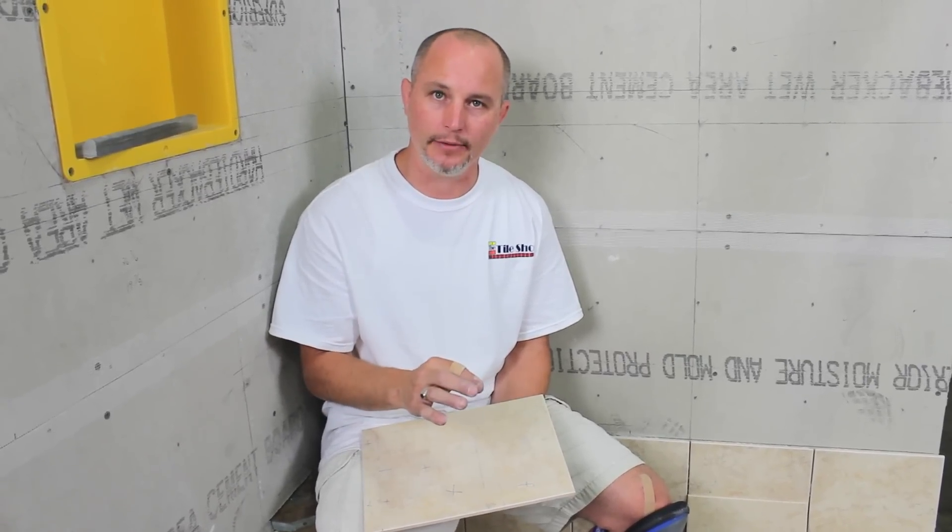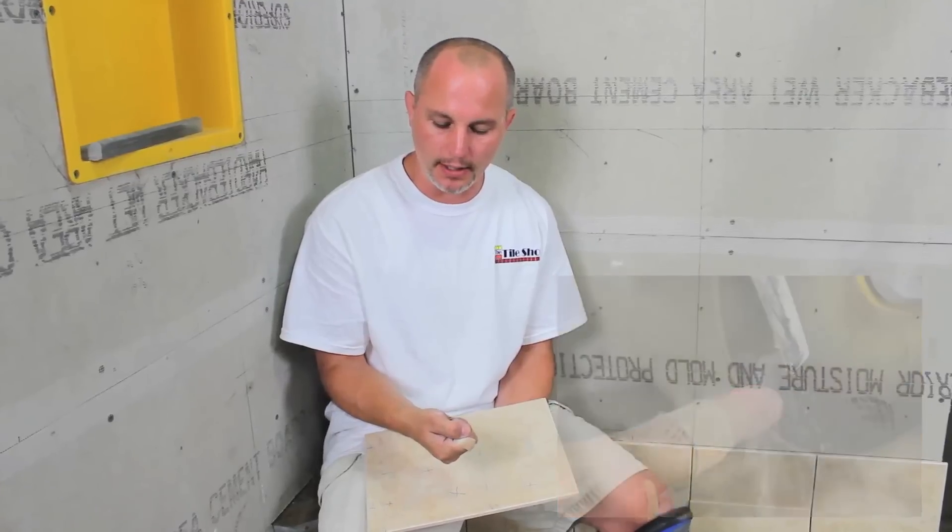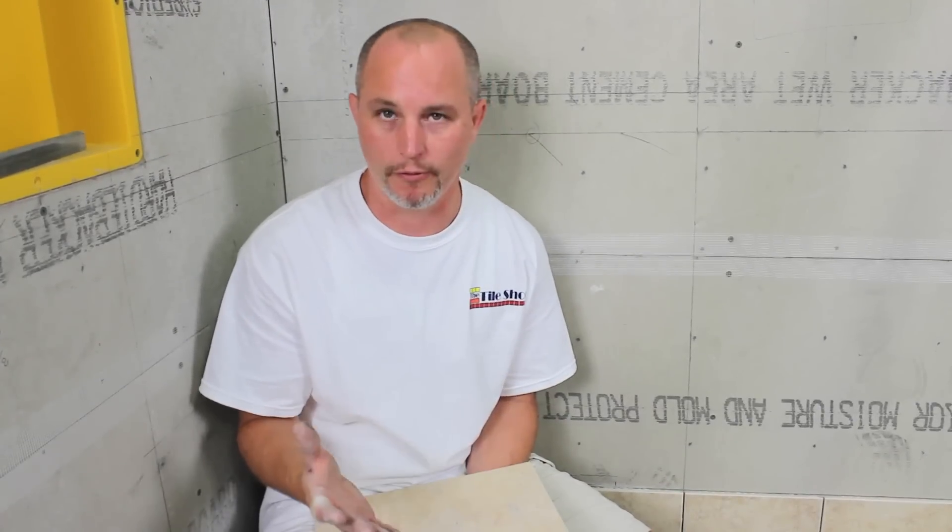The blade itself is coated with diamonds. If touched with soft skin, it's really not going to do anything to you at all. If you were to touch it with your fingernail, being a hard surface like the tile, it could put a nick in your fingernail. So don't be too afraid of the saw, but use caution.